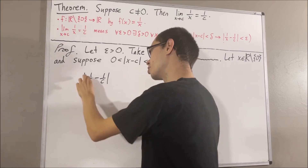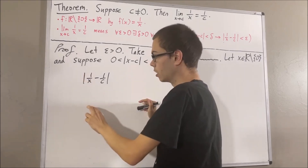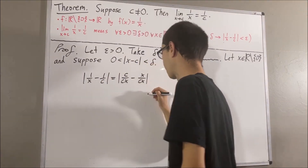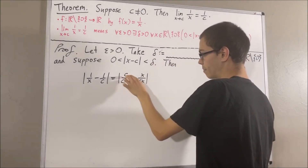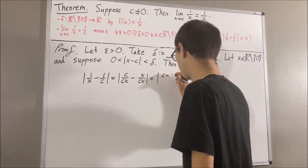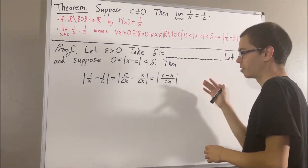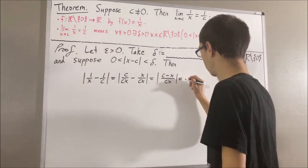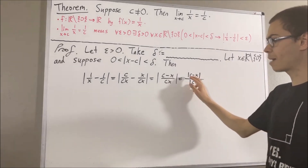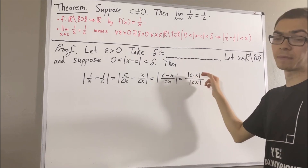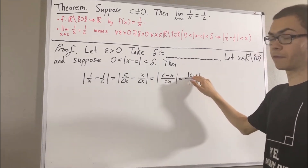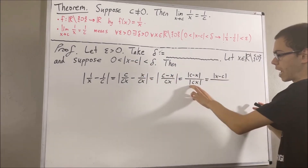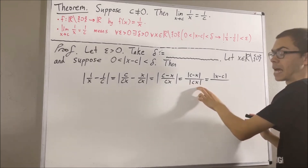Now to start, let's combine these two guys into a single fraction. To do that, we'll multiply the numerator and denominator of the first fraction by c, and we'll multiply the numerator and denominator of the second fraction by x. And then combining these two together, this is just c minus x over cx. And then a property of absolute values tells us we can split this up into the absolute value of the numerator over the absolute value of the denominator. And we know that the absolute value of c minus x is equal to the absolute value of x minus c. I'm going to rewrite the numerator as absolute value of x minus c. And also, we can split up absolute value of cx into absolute value of c times absolute value of x.